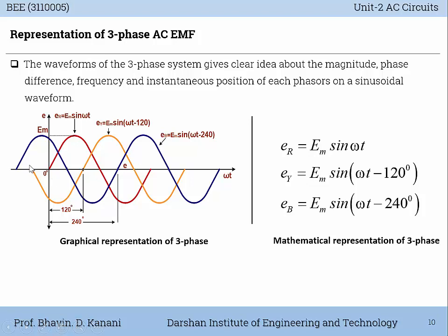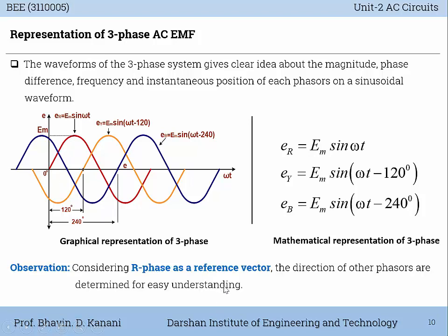The minus 120 degrees represents the time difference or lag difference between R phase and Y phase — meaning Y phase will start from 120 degrees of the reference R wave, so it is lagging behind by 120 degrees. eB = Em sin(ωt − 240°), meaning the B phase starts after 240 degrees from the start point of the R phase. Considering R phase as the reference vector, the direction of other phasors is determined.